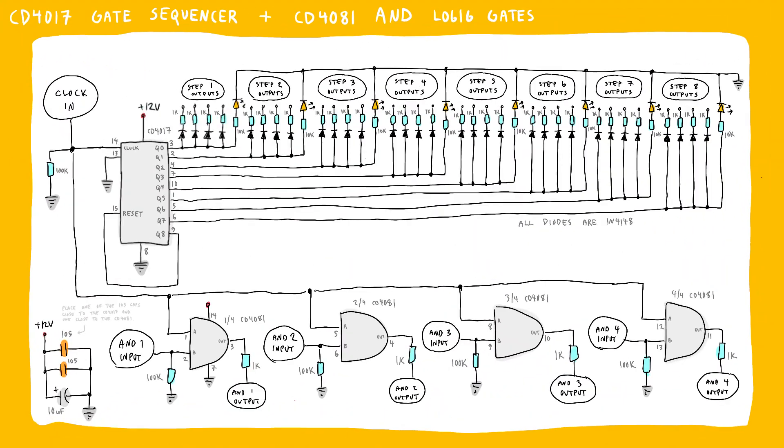Wow okay, well so it's a very bare bones 4017 gate sequencer as well as a simple CD4081 AND logic circuit. We need the AND circuit to separate the gates of different steps at the output.